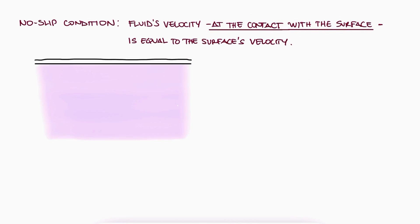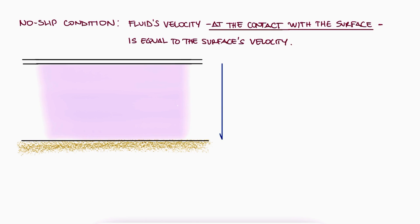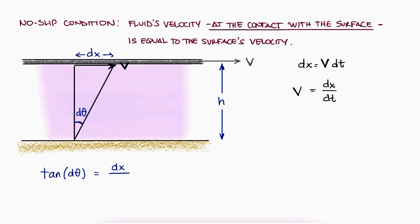For example, if a fluid is trapped between two horizontal surfaces with distance h between each other, where the bottom surface is static and the top surface is moving with velocity v, from the no-slip condition we know that the fluid particles at the very bottom are not moving, and the fluid particles at the top are moving with the same velocity v. After a small time dt, the top plate will have moved dx = v·dt.